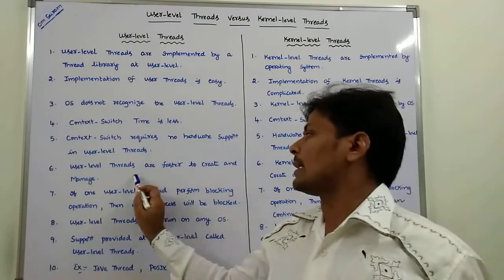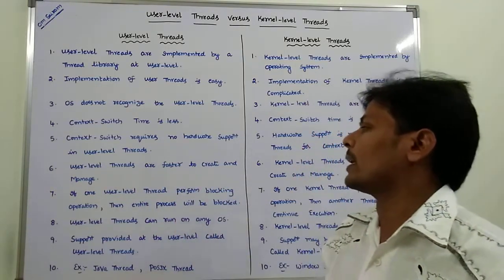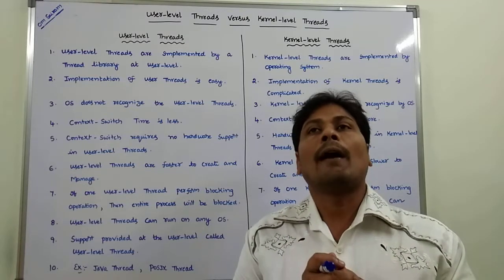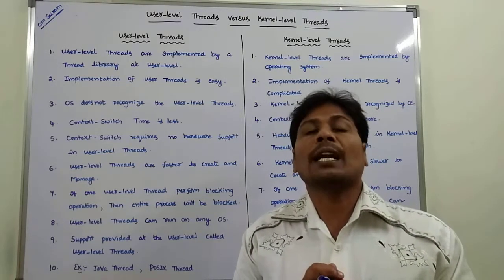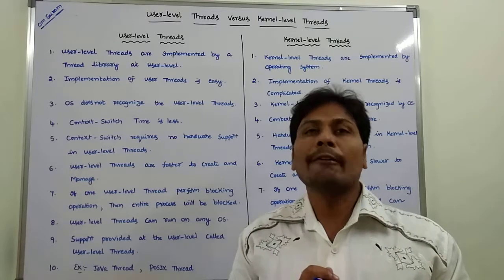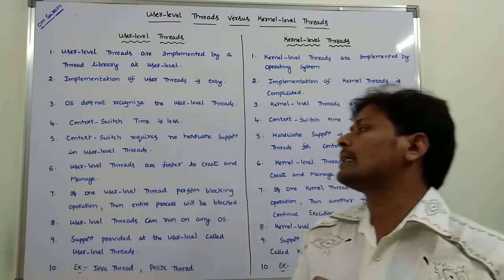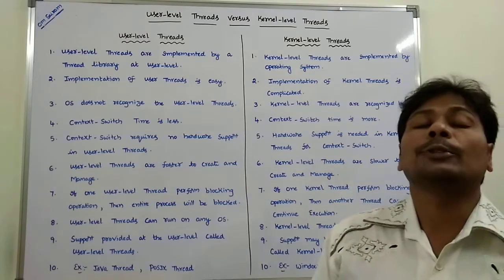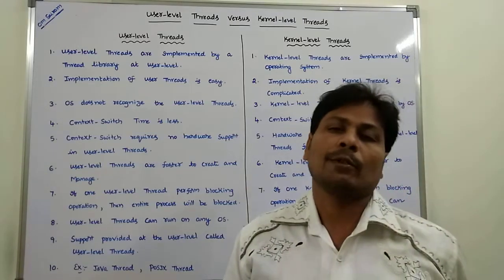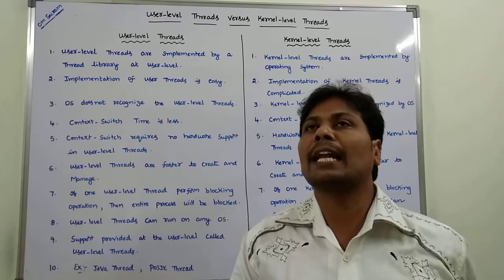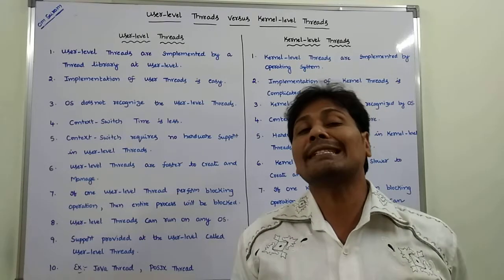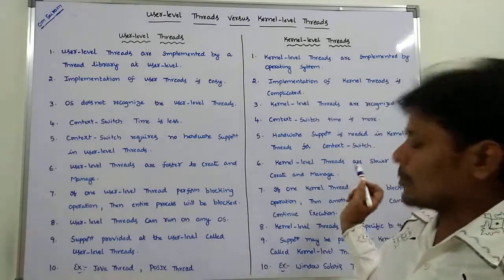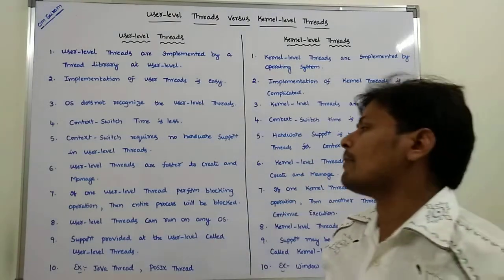User-level threads are faster to create and manage. But kernel-level threads are slower to create and manage. Creating and managing kernel-level threads takes more time compared to user-level threads.